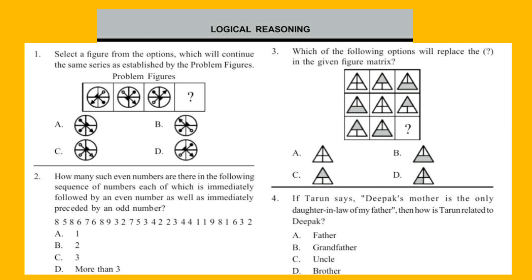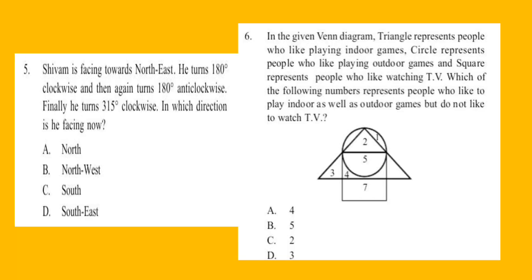Question 5: Shivam is facing towards northeast. He turns 180 degrees clockwise, and then again turns 180 degrees anticlockwise. Finally, he turns 315 degrees clockwise. In which direction is he facing now? Question 6: In the given Venn diagram, triangle represents people who like playing indoor games, circle represents people who like playing outdoor games, and square represents people who like watching TV. Which of the following numbers represent people who like to play indoor as well as outdoor games but do not like to watch TV?